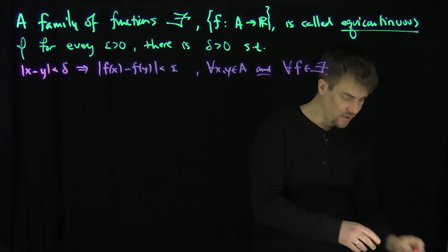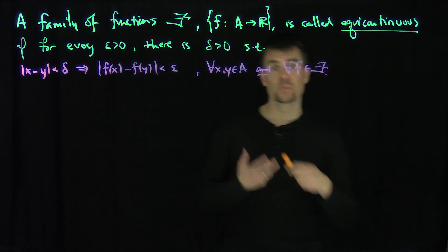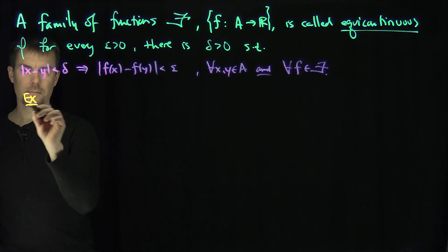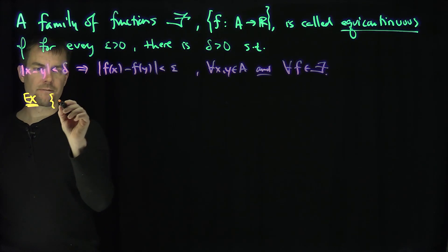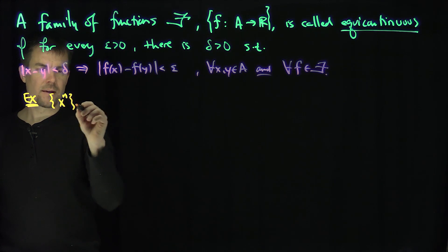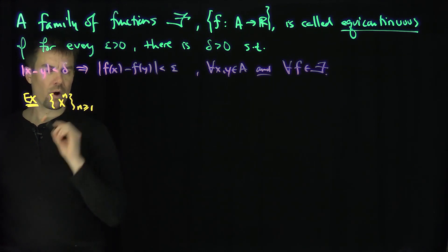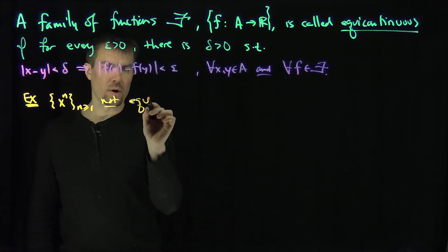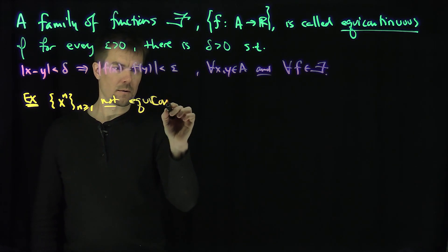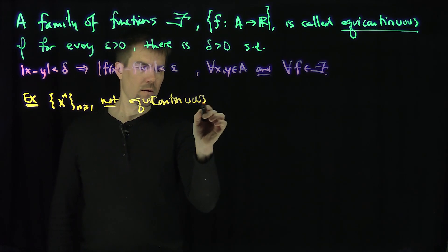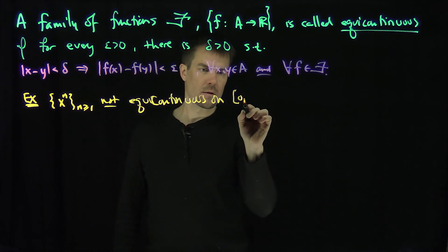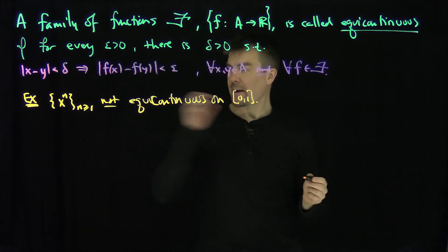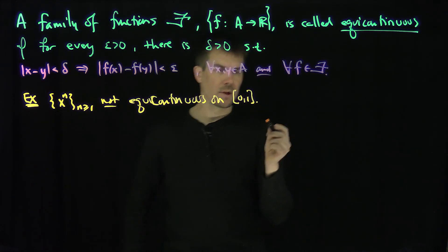So that's the definition of equicontinuity — it applies to a family of functions. Let me show you an example of something which is not equicontinuous and a family which is equicontinuous. The family of functions x to the power n, where n goes from one to infinity, is not equicontinuous on the interval zero, one.